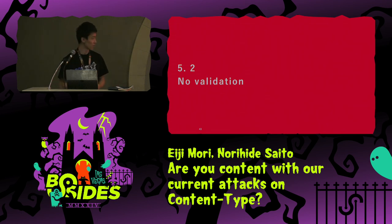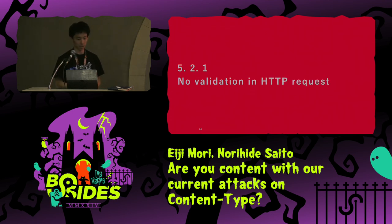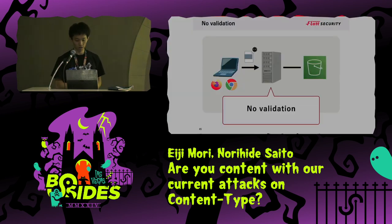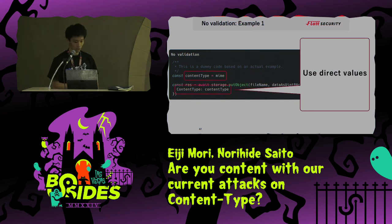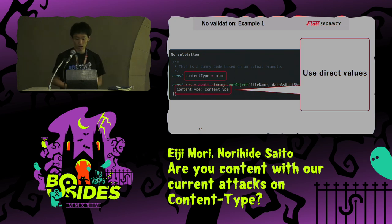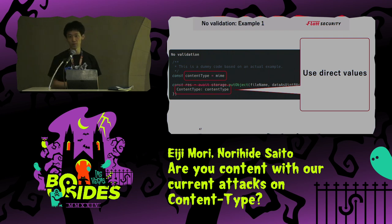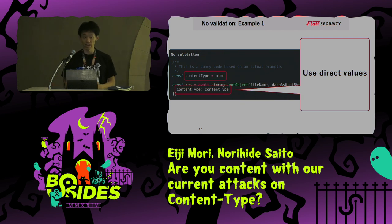Now here are patterns of validation bypass or no validation. All code presented hereafter is dummy code. In HTTP response, the server has no validation in the HTTP request. In one product, the content type received from the browser on the server side was passed directly to the object storage. As a result, any content type could be specified in the HTTP response. Although this is a simple implementation in terms of code, we encountered many such search patterns. This enables XSS.